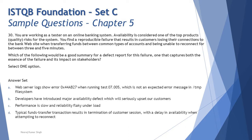Let's look at each option and understand which one best gives the essence of the failure and its impact on the stakeholder as part of a defect report. Option A reads: web server logs show error 0x44ab27 when running test 7.005, which is not an expected error message in the /temporary file system directory.